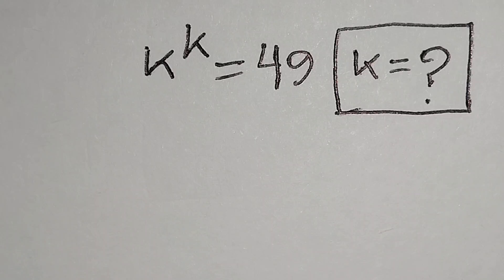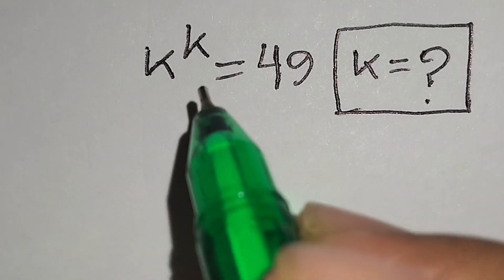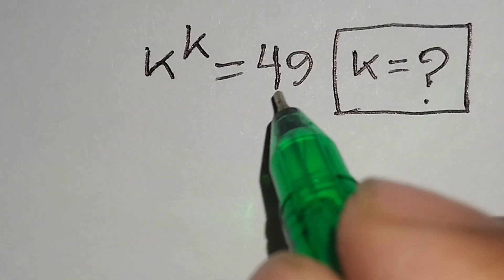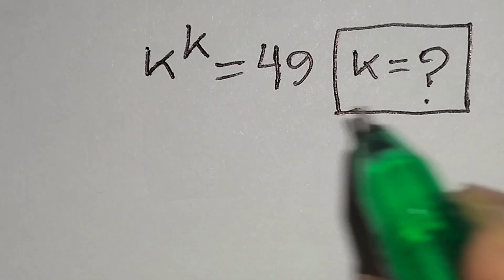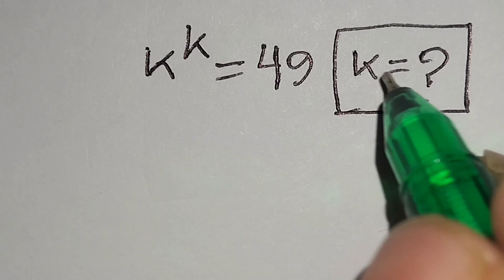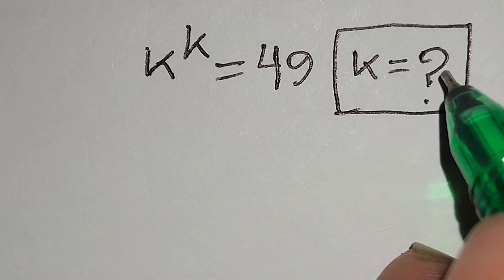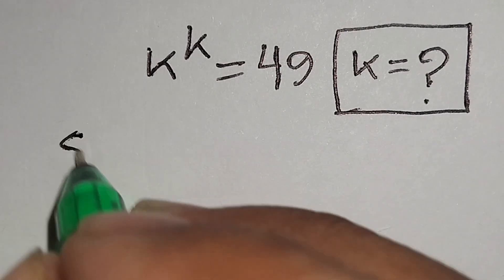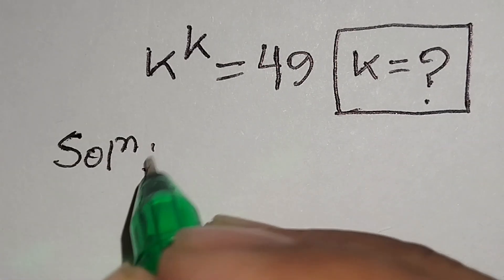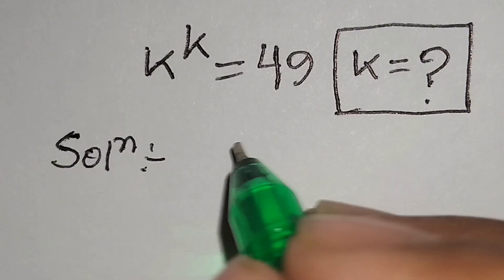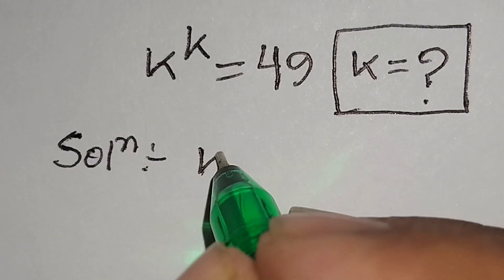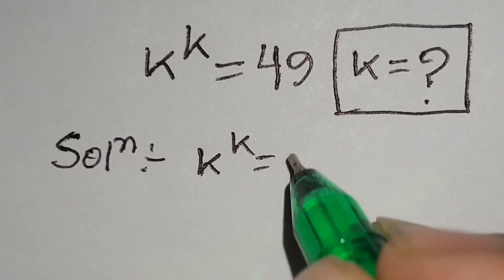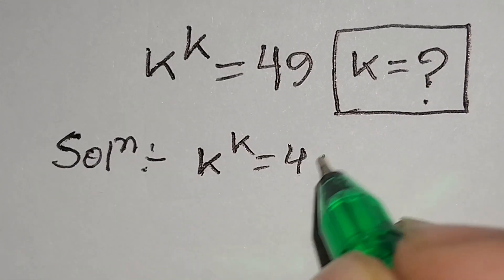Hello. This is a nice exponential math problem: k to the power k is equal to 49, and we have to find the value of k. Let's start the solution. The given equation is k to the power k is equal to 49.